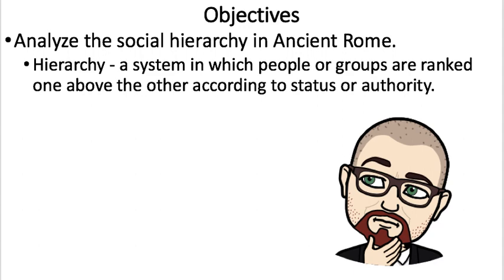Today we're going to look at the social hierarchy in ancient Rome. To understand that, you should know that hierarchy is essentially a system of ranking people according to status or authority — basically who has the most power and who has the least. We're going to see that there are different levels of hierarchies within Roman society.